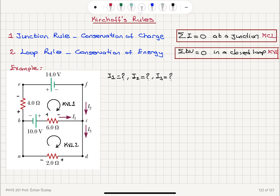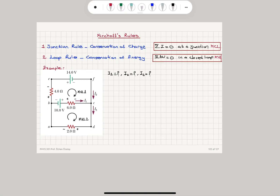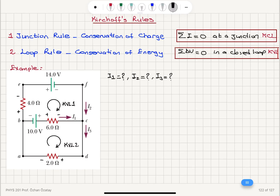In this example, we have I1, I2, and I3 to find. I1 is the current that flows through the 6 ohm resistor. I2 is the one that flows through the battery, and I3 is the one that flows through the 2 ohm resistance. We can apply Kirchhoff's current law at point C.